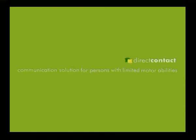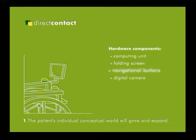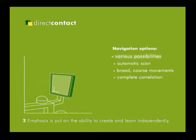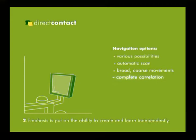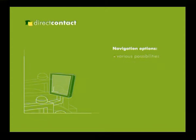Following that situation, we saw the need to develop a tool like Direct Contact, for the purpose of giving these children a chance to communicate. The necessary equipment needed to activate Direct Contact is a computing unit, a screen, navigation means, and a digital camera. Emphasis is put on the ability to create and learn independently. There are various possibilities for customizing the navigation tool for any specific motor disability. The navigation tool can be activated by broad course movements. The general idea is operating with only two options: movement and selection.